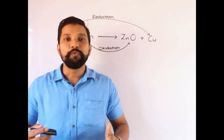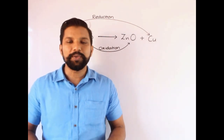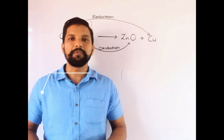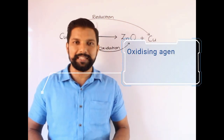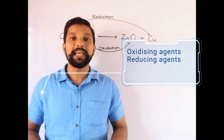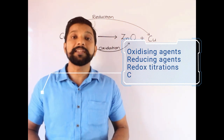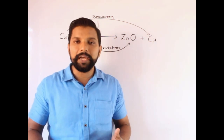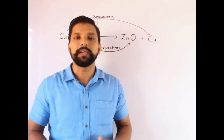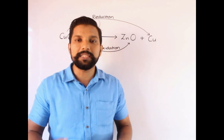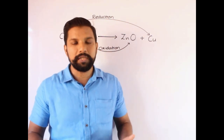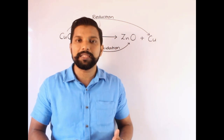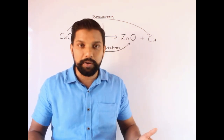Hi everyone, welcome back to Redox lesson part 2. In this video we will be learning about oxidizing agents, reducing agents, experiments, and the titration calculations. First we have a look at a simple redox reaction in order to understand what is an oxidizing agent, what is a reducing agent, and what changes would take place in oxidizing agents and reducing agents during the course of reaction.